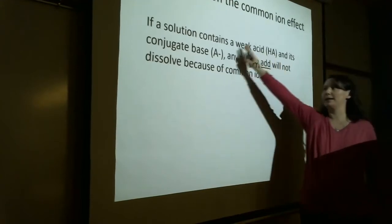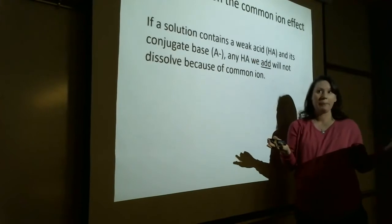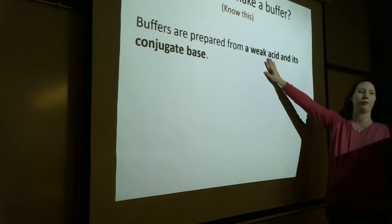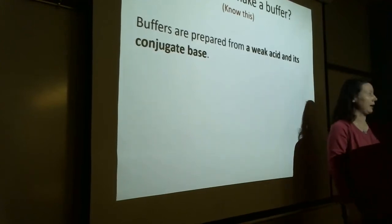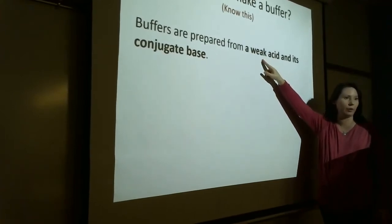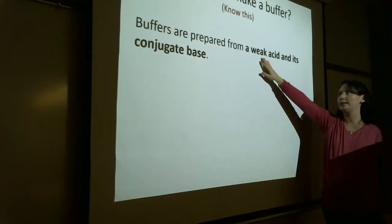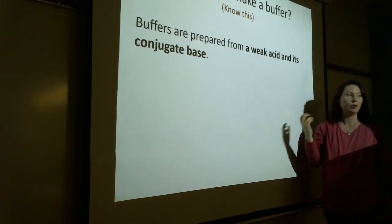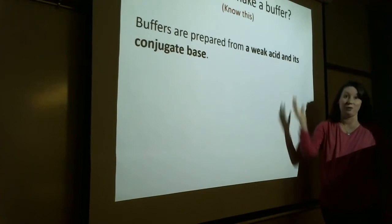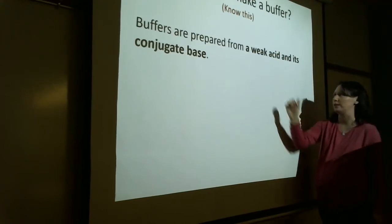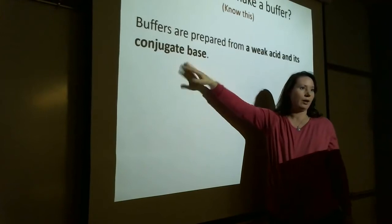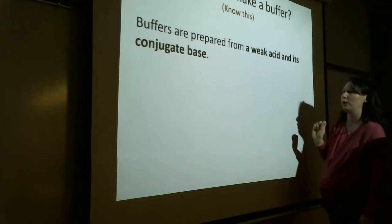If a solution contains a weak acid and its conjugate base, you've got both the acid component and the base component, giving you a solution that can resist changes in pH. How do you make a buffer? Two requirements: you must have a weak acid — strong acids fully dissociate, so equilibrium is always all the way on the products side. With a weak acid, because it only partially dissociates, you can shift that equilibrium from side to side much more easily. You must also have the conjugate base — both the acid component and the base component.